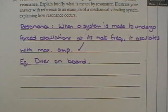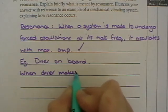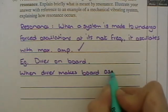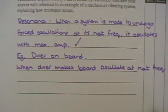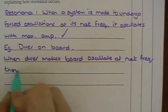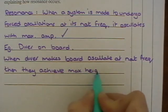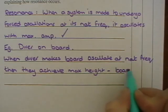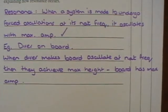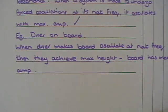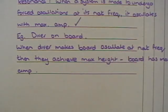So what happens there is that when a diver makes a board oscillate at natural frequency, so he jumps at the right times or she jumps at the right times, then they achieve maximum height. In other words, because the board has a maximum amplitude. So when that's the frequency of their legs, then they achieve maximum height. So that's an example.